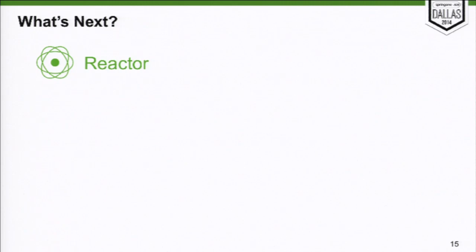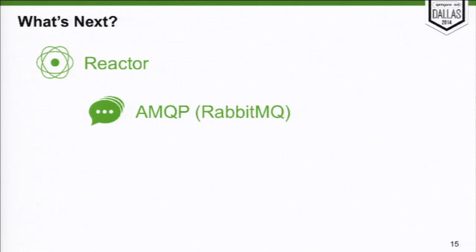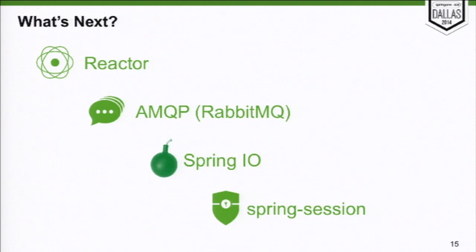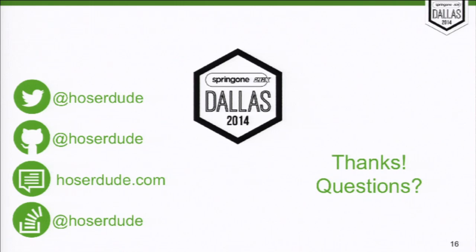Down the road, when we get more time, I'd like to look into Reactor for async processing with callables and establish a standard pattern for that. We're going to get into inter-process messaging as we add more collaborative features to the product. Spring IO is promising to simplify the POM management even further. I'd also like to get rid of our own Spring Session implementation and use the official one coming out this fall.